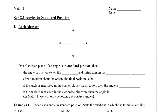In this video, I'm going to show you what it means to have an angle in standard position, and then also show you what reference angles are. So on a Cartesian plane, meaning that it's a two-dimensional surface, if an angle is in standard position, then the angle has its vertex on the origin and the initial arm on the positive x-axis.